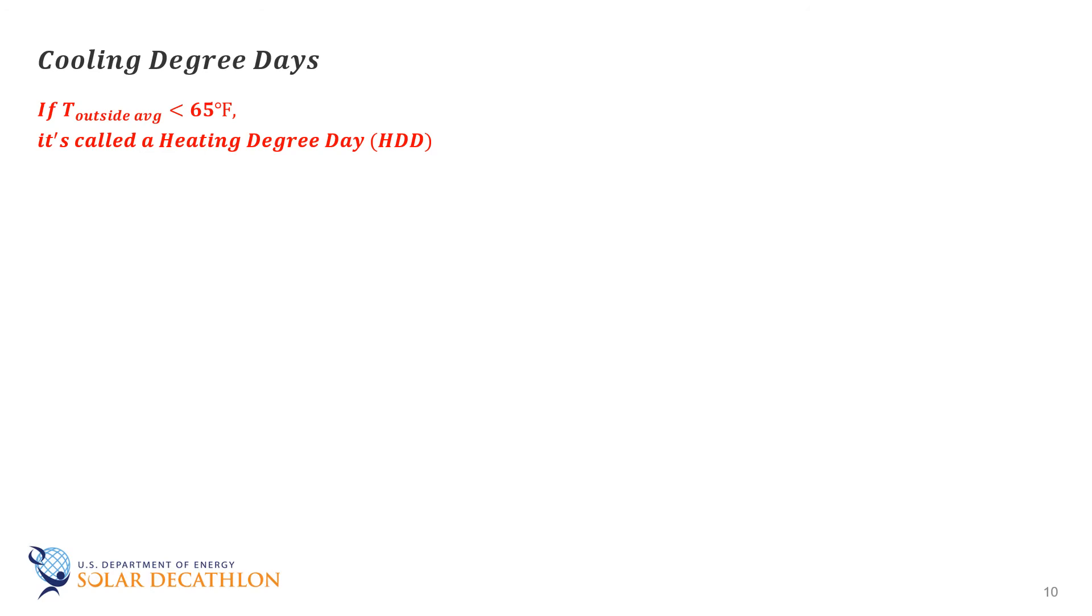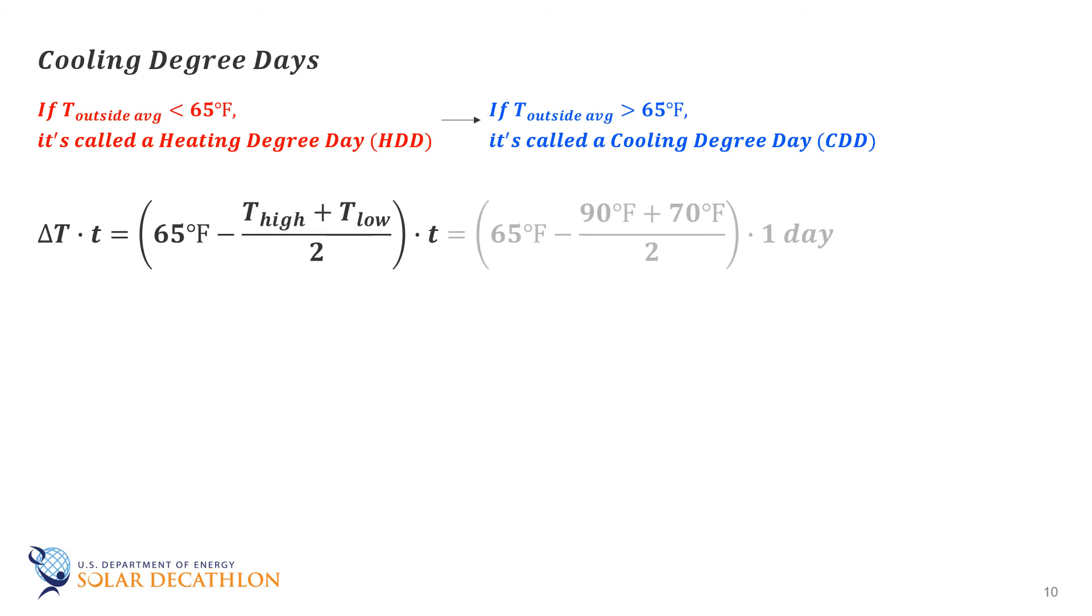Cooling degree days are calculated in a similar manner, except they are tabulated when the average outdoor temperature is above 65. A day with a high temperature of 90 degrees Fahrenheit and a low temperature of 70 has 15 degree F days.